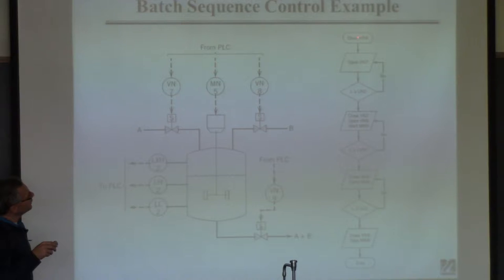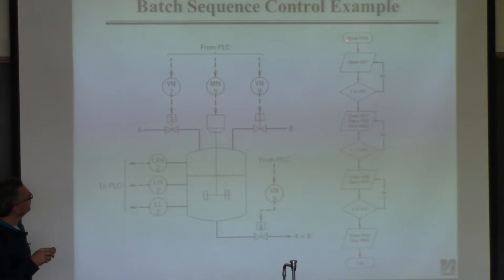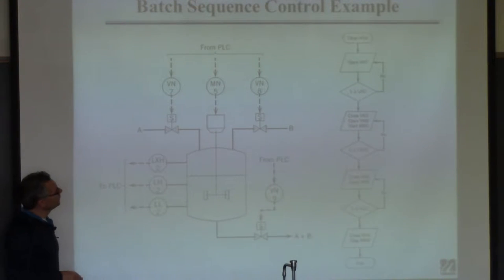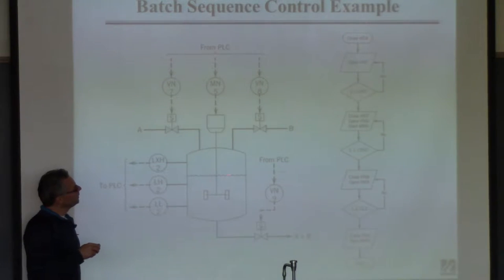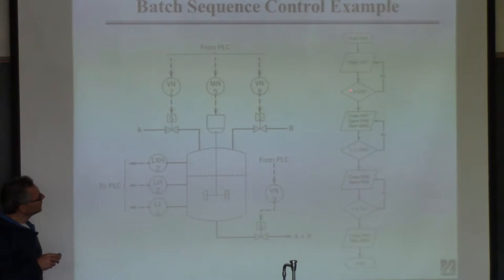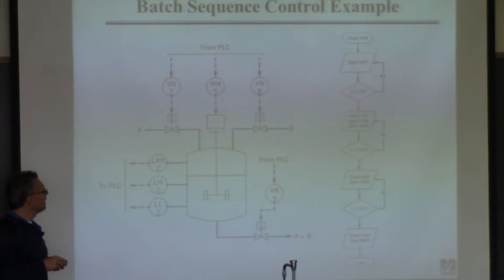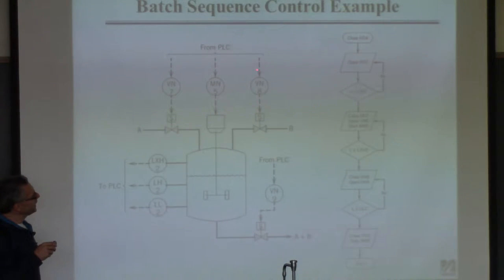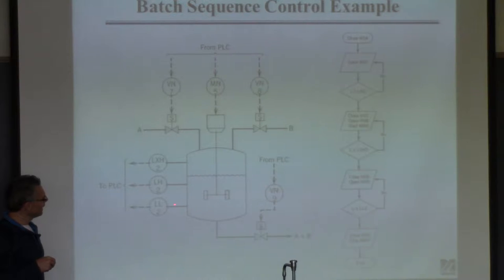Here's how this would be used. First, open the valve and feed in reactant A until the level reaches the low level point. Once the level reaches that point, close this valve, open the next valve, and start mixing. Then keep adding component B until the level gets to the extra high point. Once the level reaches that point, close the inlet and open the outlet, draining the tank until the level drops below the low level. Then close that valve and stop mixing.